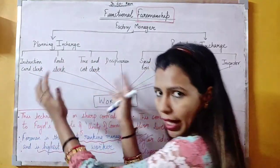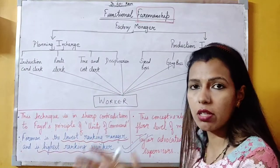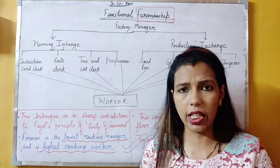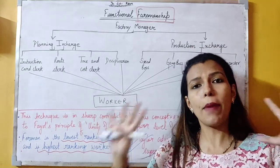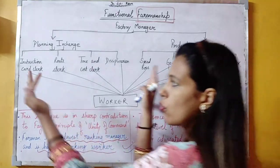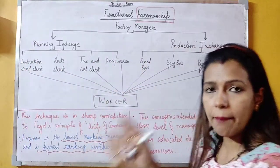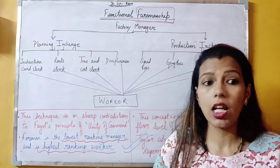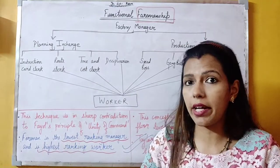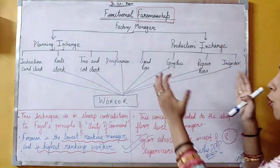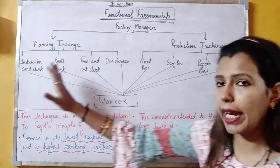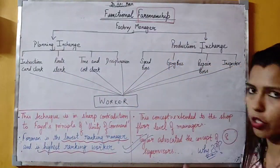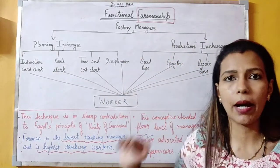The planning supervisors sit in their cabin and frame plans — they do not take rounds in the factory. They just plan and put work into different planning categories. The production supervisors take rounds in the factory, oversee all the work with their eyes, and execute production. Taylor divided the eight Foremen into two categories: four for planning and four for production.